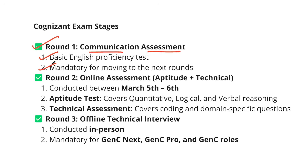I was also getting queries that in the technical assessment, some selected Cluster 3 but got Cluster 1, or selected Cluster 2 but got Cluster 1. For Java folks who got Cluster 3, they were asking whether to attempt it since they don't know C#. Don't think like that — just attempt whatever assessments you are getting. Even attempting is important sometimes. You never know how the cutoff will go. We have seen cases where students missed a lot of questions and still got shortlisted for interviews. Cognizant is conducting assessments in phases, so if you haven't received your email yet, you will get it soon.